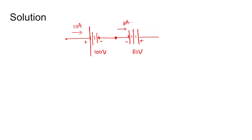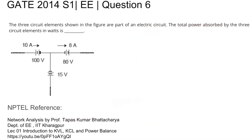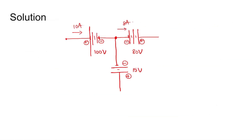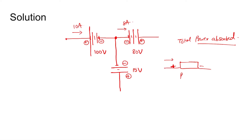Now doing the circuit: this is the minus (shorter leg) and this is the plus, as shown in the diagram. Again, shorter leg here means minus and this is plus, and this is plus — note we need to find total power absorbed. The voltage here is 100 volts, 10 ampere is flowing in, and 8 ampere is going out. Using Kirchhoff's Current Law at this node: 10 ampere coming in, 8 going out, so the remaining 2 ampere flows through this branch.